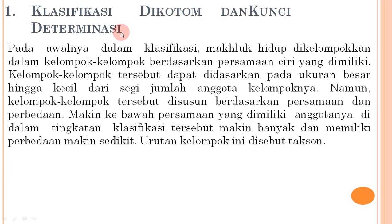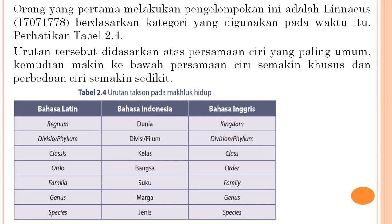Selanjutnya klasifikasi dikotom dan kunci determinasi. Dalam klasifikasi, makhluk hidup dikelompokkan berdasarkan persamaan ciri. Kelompok-kelompok tersebut disusun berdasarkan persamaan dan perbedaan: makin ke bawah, persamaan yang dimiliki anggotanya makin banyak dan perbedaannya makin sedikit. Urutan kelompok ini disebut takson.